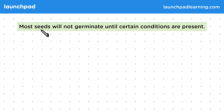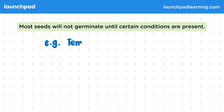Most seeds will not germinate until certain conditions are present. For example, these conditions could be a certain temperature or humidity for a certain period of time.